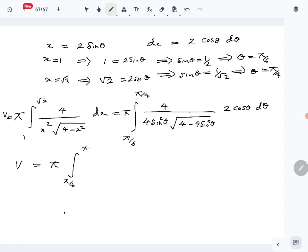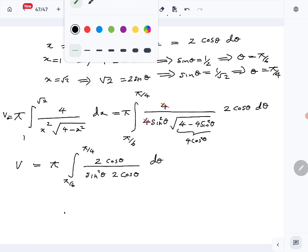Now simplify. π over 6 to π over 4. We can cancel: 4 and 4 cancel, we have 2 cosine theta over sine squared theta. This becomes 4 cosine squared theta, so take the square root you get 2 cosine theta. Again we can cancel 2 cosine theta.